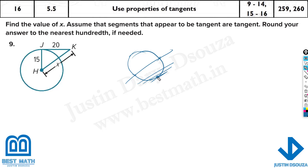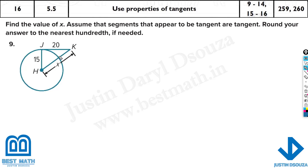When you draw a straight line from the tangent to the center of the circle, it always forms a 90-degree angle. So here we can easily observe that this cannot be a tangent — this is the radius. But this one is a tangent because it is only touching outside the circle at point G, and this will be the 90-degree angle.